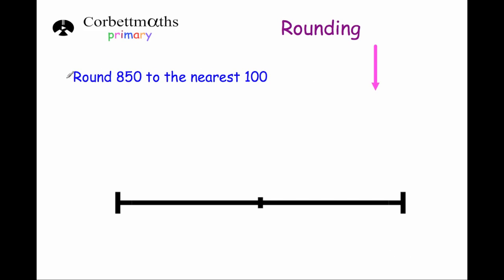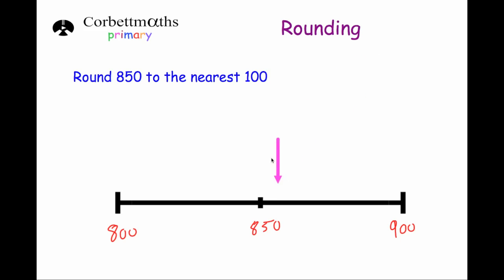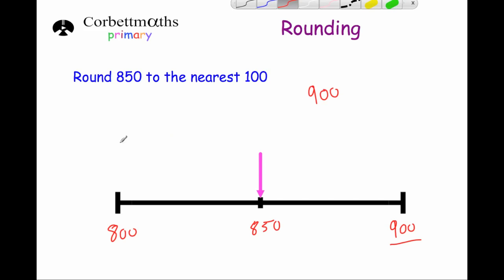Our next question asks us to round 850 to the nearest hundred. The multiple of 100 below 850 is 800, above is 900, and 850 is exactly in the middle. On the number line, 850 is neither closer to 800 nor 900. But the rule is: whenever the number is midway between the two hundreds, we always round up. So we round 850 up to 900. This applies to any number ending in 50, like 350 or 2,750 — always round up to the hundred above.